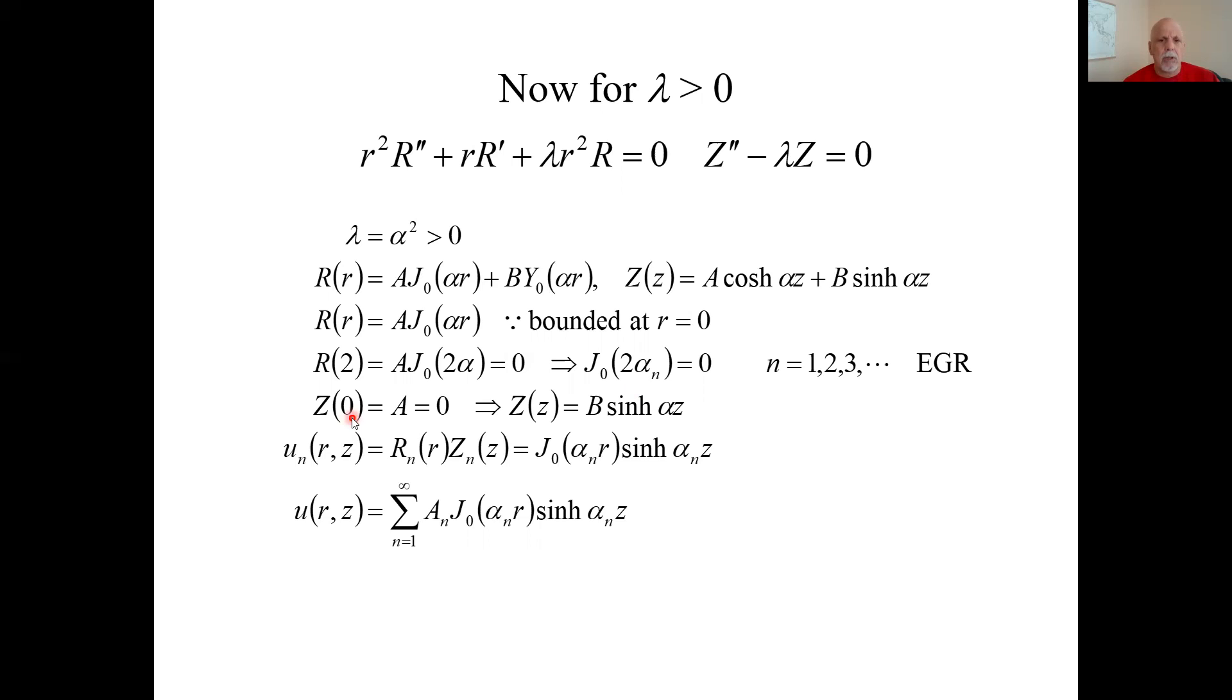At the argument of zero, this was the general solution. At the argument of zero, it's just A, and the boundary condition says it's zero here. So the surviving Z function is this, some constant times the hyperbolic sine. Put the two solutions together, the R solution and the Z solution. You get this, add them up over all solutions. To get the general solution, you get this. You don't have the big A sub n's yet.